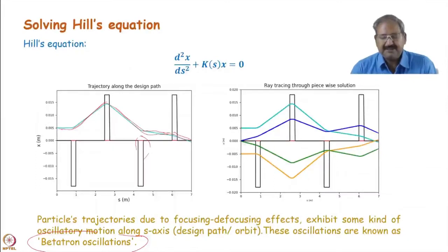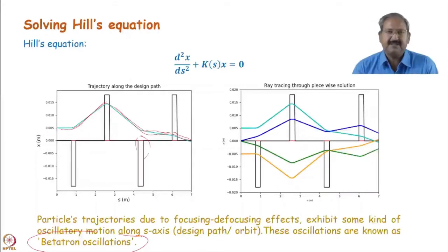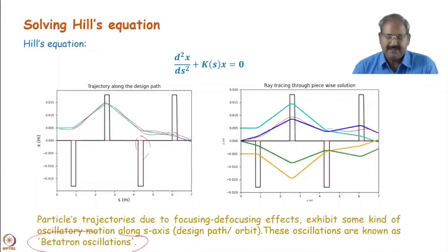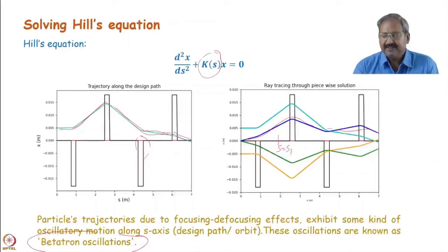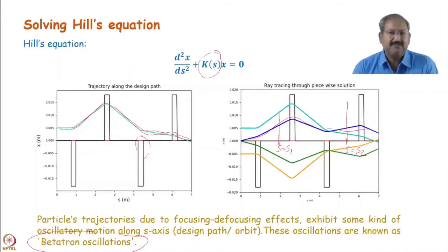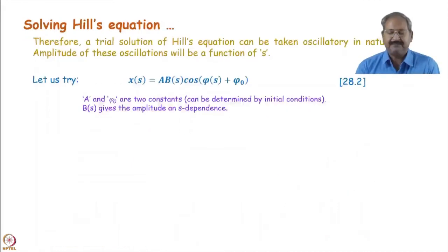Now we know that there will be some oscillatory type solution for the Hill's equation. These oscillations are not very simple — you cannot represent them by a single sinusoidal. This may be because of the S dependence of K: if you choose a particular S, you get a different K meaning a different local wavelength. It means the amplitude will also be a function of S. Keeping these two things in mind — an oscillatory solution and an S-dependent amplitude — we can propose a trial solution of this equation.